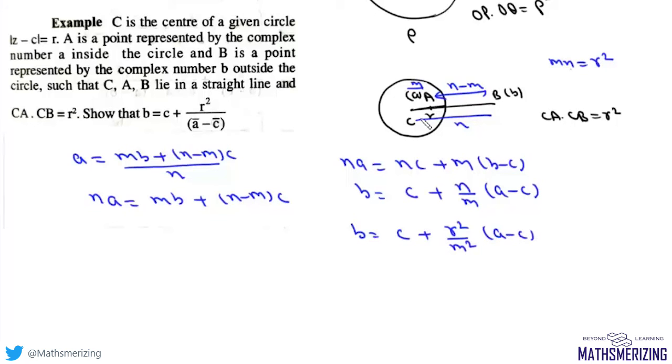Now what's m? m is the distance between A and C. So we can write m as |a - c|. So it will be b = c + r²/(a - c), and m squared is |a - c| squared, which equals (a - c) times (ā - c̄).